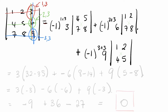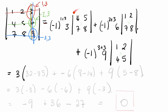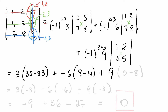Now let's work this out. (-1)^(1+3) = (-1)^4 = 1, so the first term is 1 × 3 × (4·8 − 7·5) = 3 × (32 − 35). Then (-1)^(2+3) = (-1)^5 = −1, an odd power, so the second term is −6 × (1·8 − 2·7) = −6 × (8 − 14). Finally, (-1)^(3+3) = (-1)^6 = 1, an even power, so the third term is 9 × (1·5 − 4·2) = 9 × (5 − 8).